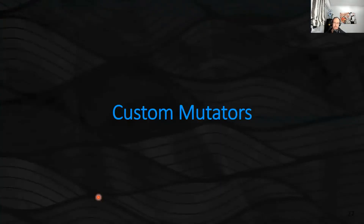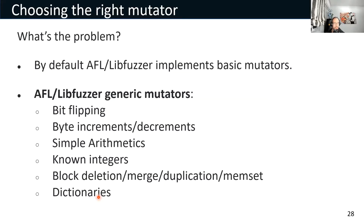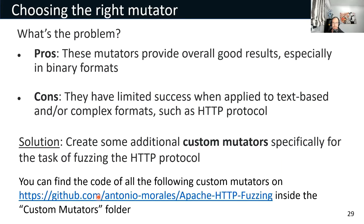Let me give a brief introduction about custom mutators. By default, AFL and libFuzzer implement basic mutators like bitflipping, byte increments, or known integers. These provide good results for binary formats but are not so good for complex formats like HTTP. My solution was to include additional custom mutators specifically created for fuzzing the HTTP protocol. You can find the code of all these custom mutators in my GitHub repository.